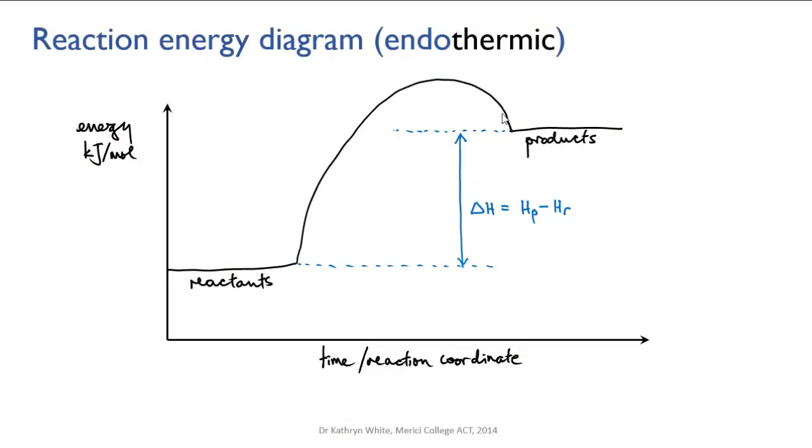For an endothermic reaction, activation energy has to be at least as big as the enthalpy change because if the reactants are going to be transformed into the products, they need to get up to at least the enthalpy of those products.